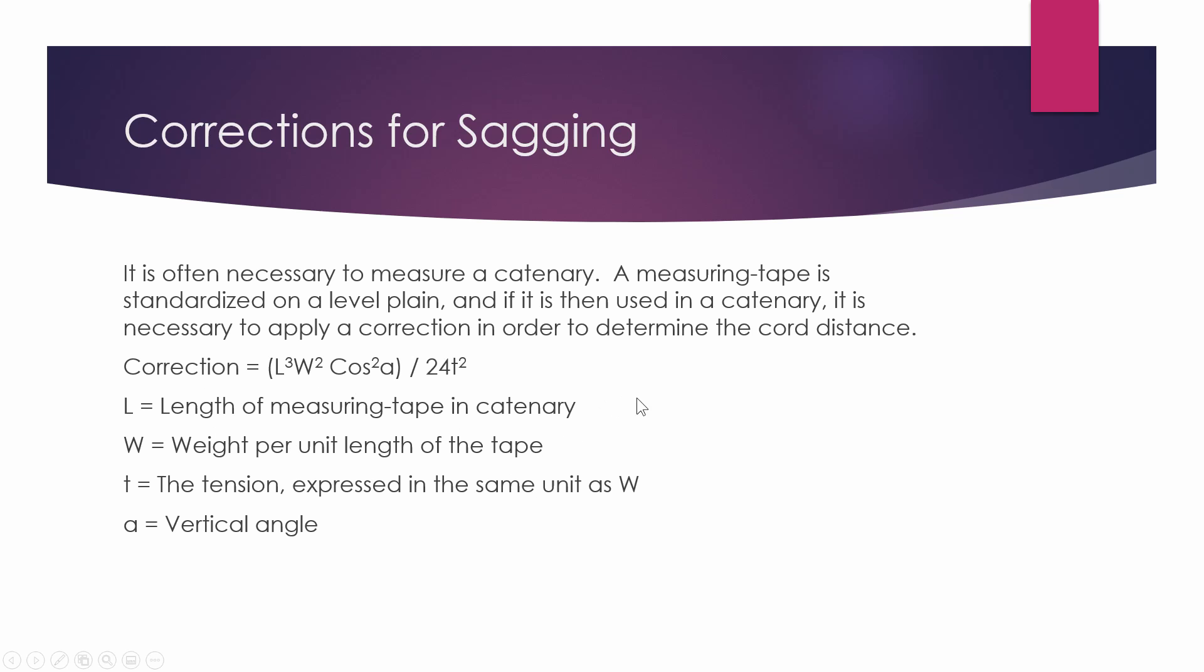Then we have our correction for sagging. There's a bit more complicated calculation and it can be split up into sections, which I'll explain now. We have our length, which is cubed. That's the same as AB, as S, and as D. So this is our length that we measured. Then we have our weight per unit length of tape. We have our alpha and we have our tension. So this is the standard formula. I'll show you how to use it in the example I'm about to go through.